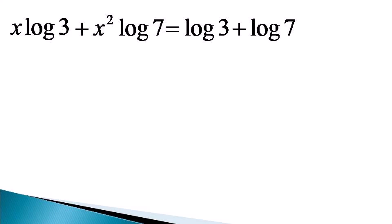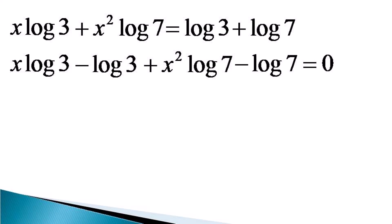In this equation we take all the terms on the left hand side to get x log 3 minus log 3 plus x square log 7 minus log 7 is equal to 0.